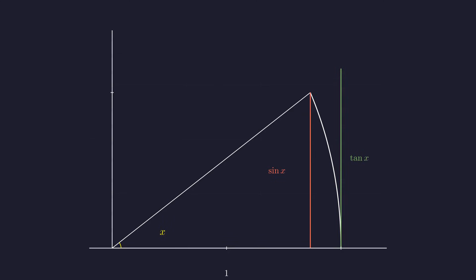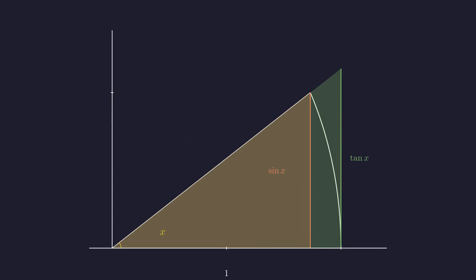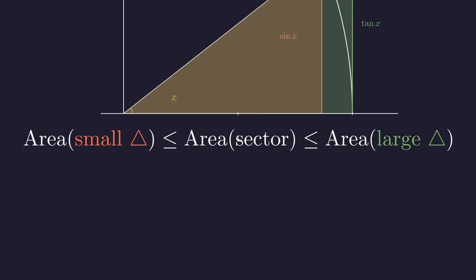We begin by drawing a unit circle with a radius of one centered at the origin. We'll first consider a small positive angle x approaching zero from the right. Let's define a sector with angle x. The height of the point on the circle is, by definition, sine of x. The height of the tangent line at x equals 1 is tangent of x. By visual inspection, we can establish an inequality of three areas: the area of the small red triangle, the area of the circular sector, and the area of the large green triangle. The area of the red triangle is less than or equal to the area of the sector, which is less than or equal to the area of the green triangle.